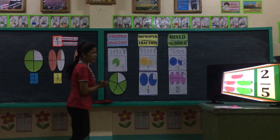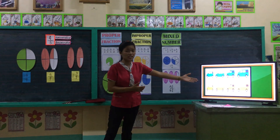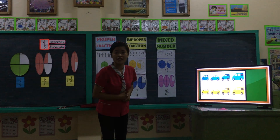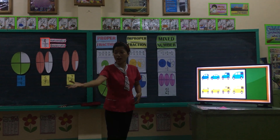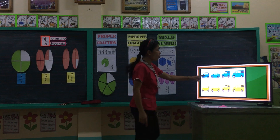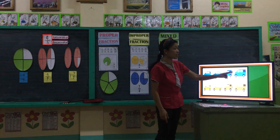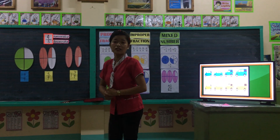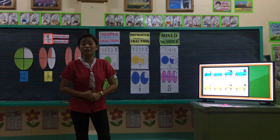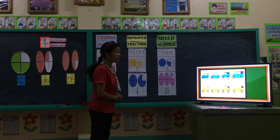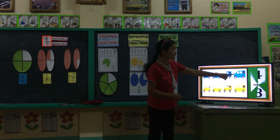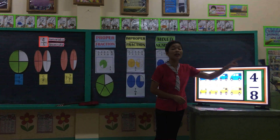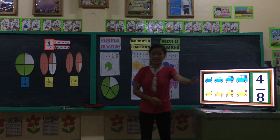Now, another example. Try to look at these cards. How many are blue cards? Correct, we have four. And what is the total number of parts? Very good, we have eight. So that gives us four-eighths.